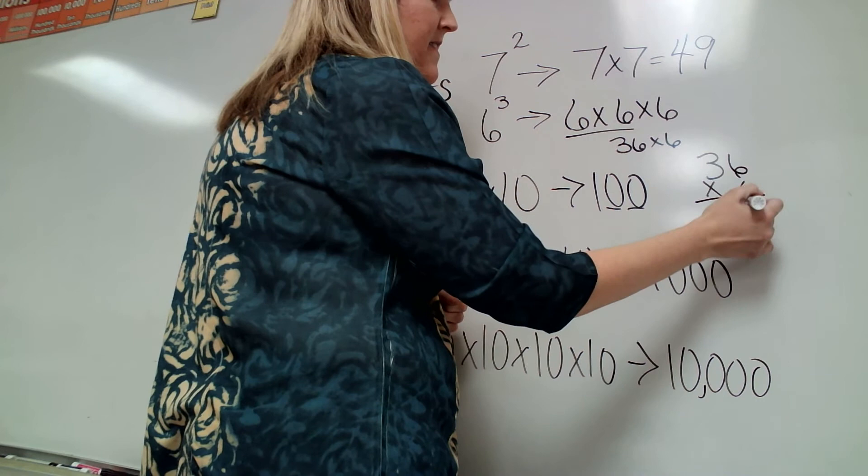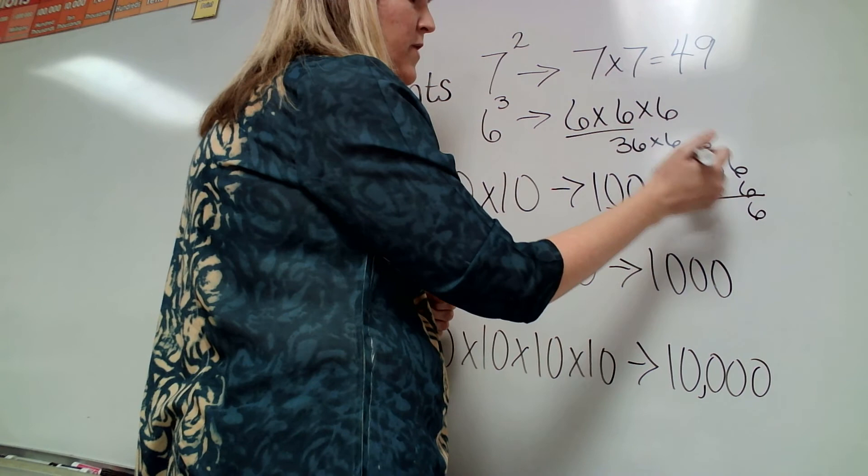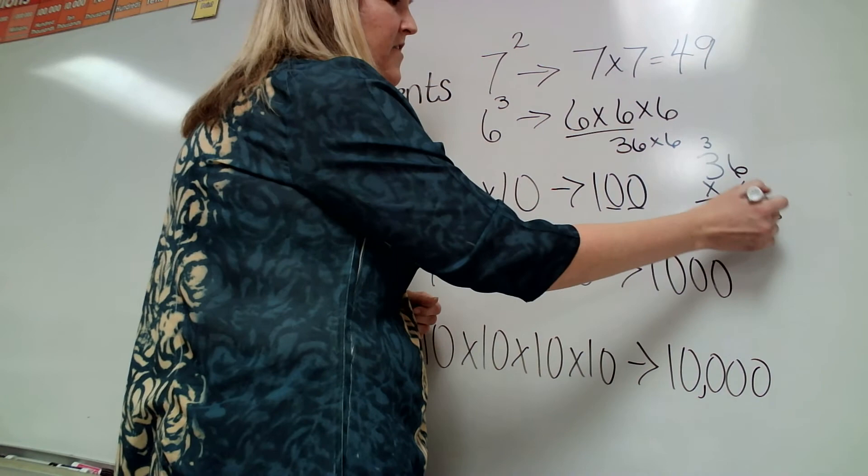So 36 times 6, 6 times 6 is 36. And then 6 times 3 is 18, 19, 20, 21. I know that was actually 6 times 30. But my final answer is going to be 216.